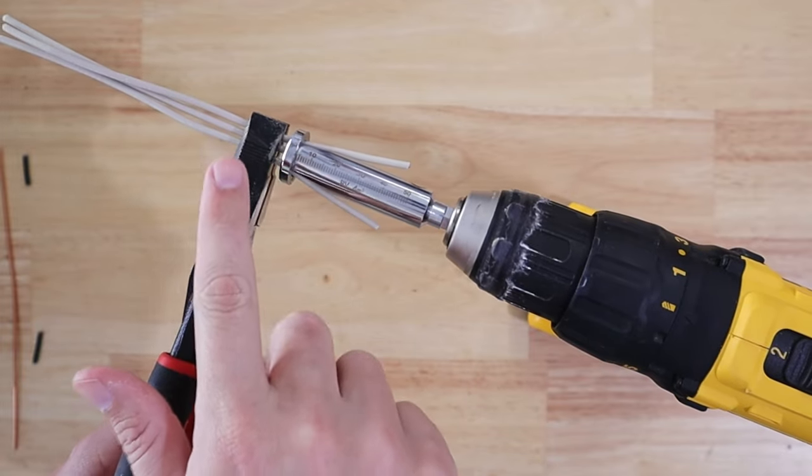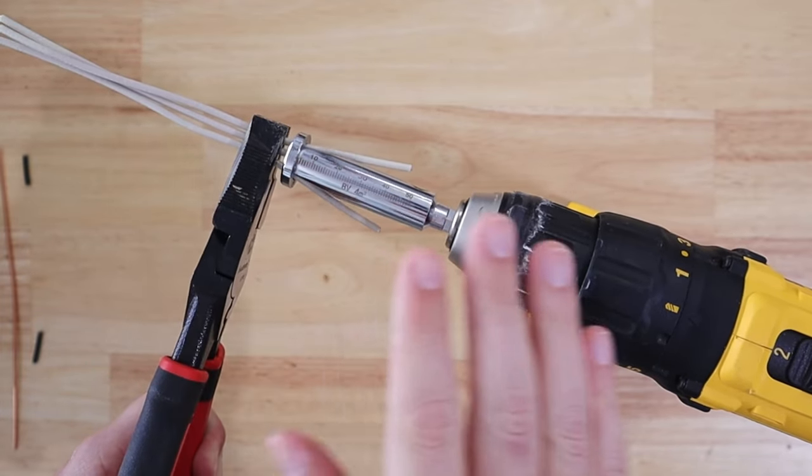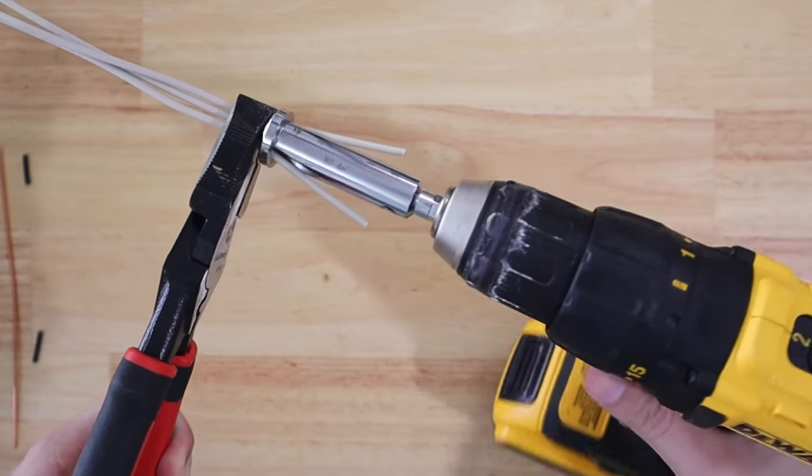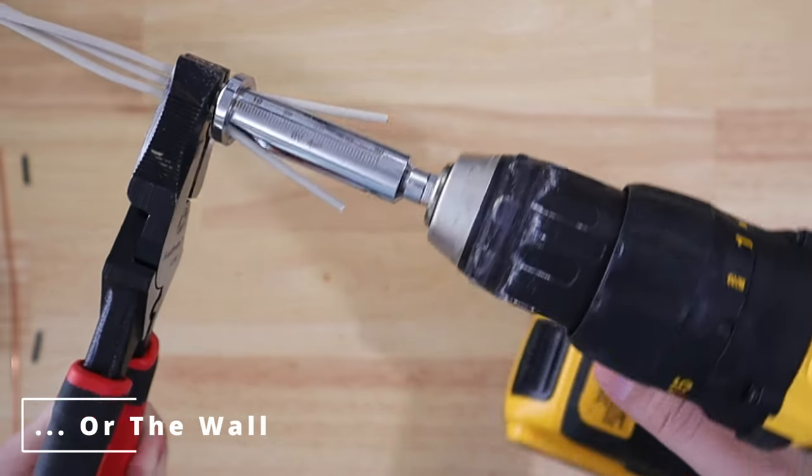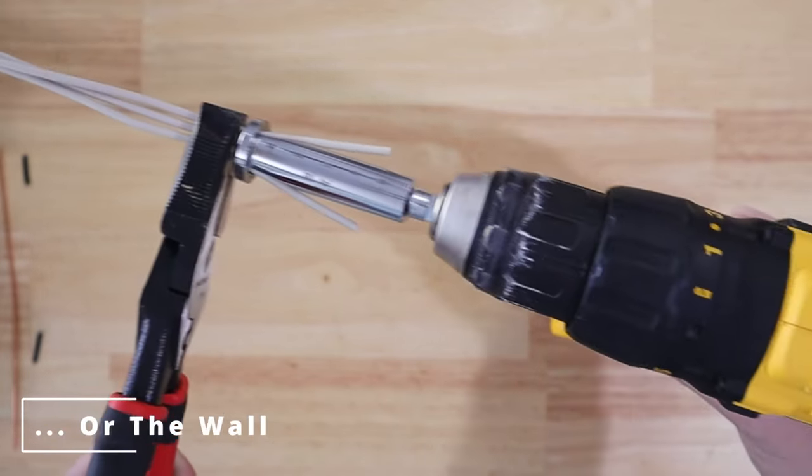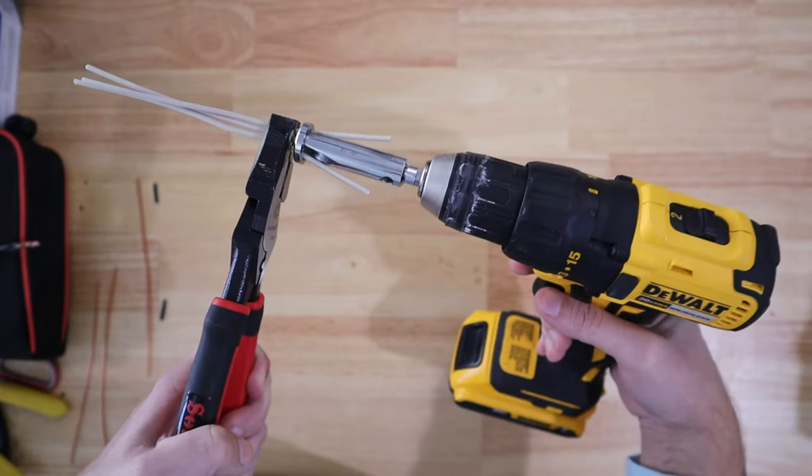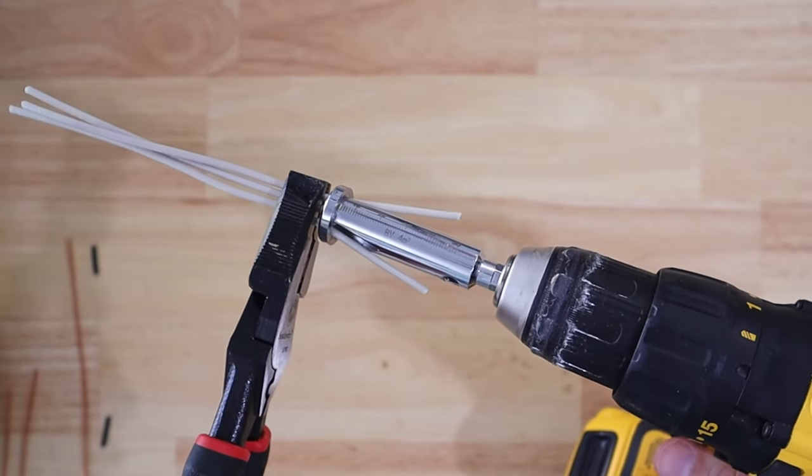You're supposed to use a pair of pliers to hold the wires so that while it's twisting it's not just pulling the wires out of your hand and it can twist as efficiently as possible. So we've got them in place, got it set up to twist clockwise, and let's see what it does.